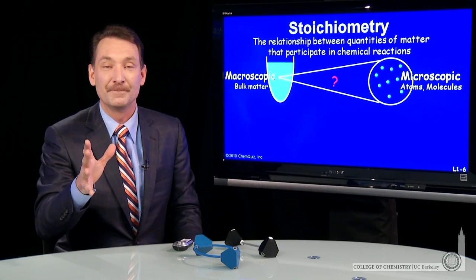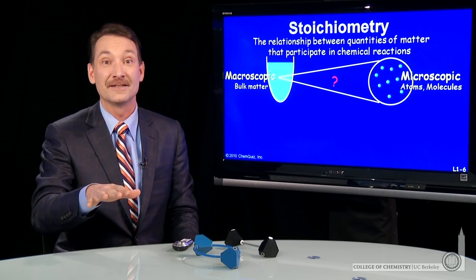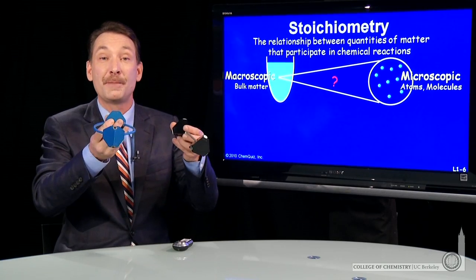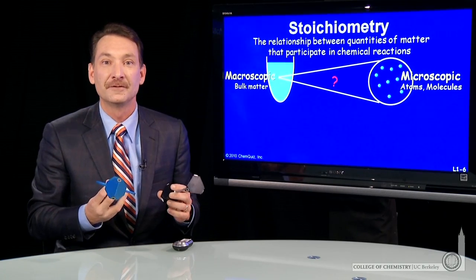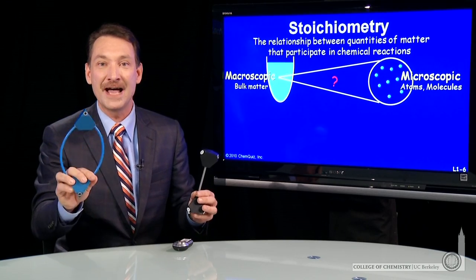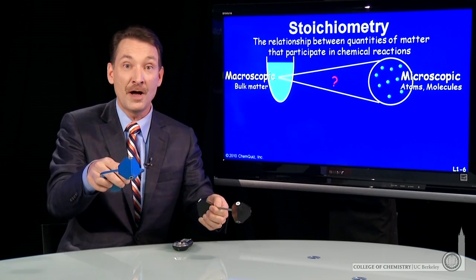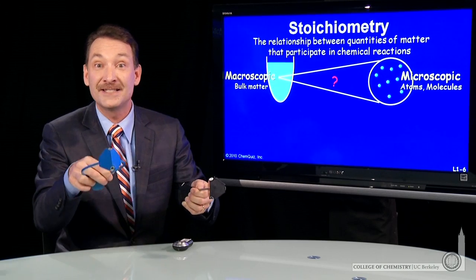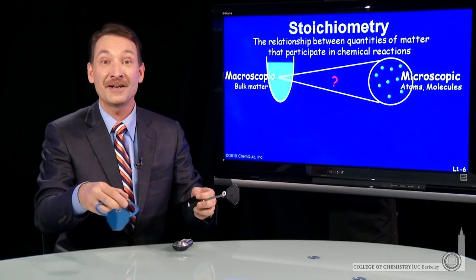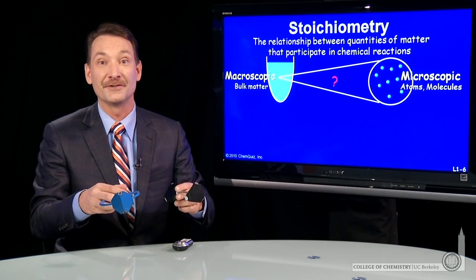It turns out it's pretty easy — we just scale up from the relative masses of the individual particles to masses that we can measure. For instance, if we know oxygen has 16 times the mass of hydrogen, then if they're going to react 1 to 1, the mass ratio will always be 16 to 1. That is, 16 grams of oxygen will react with 1 gram of hydrogen and have the same number of particles.